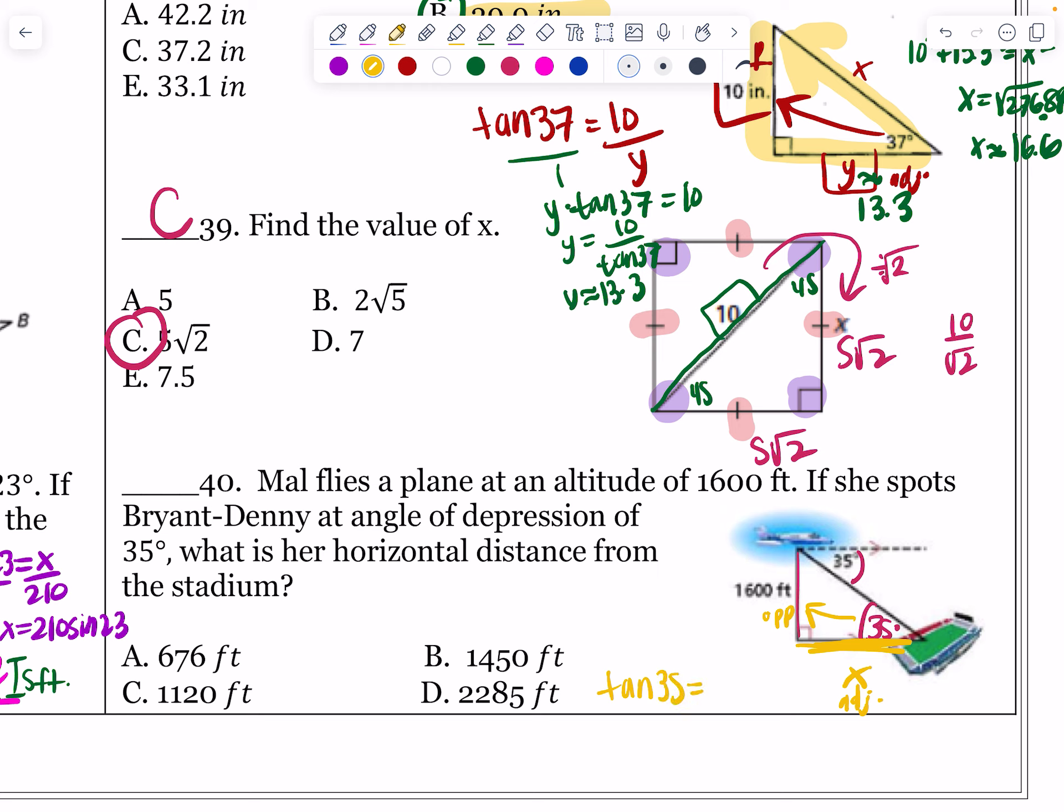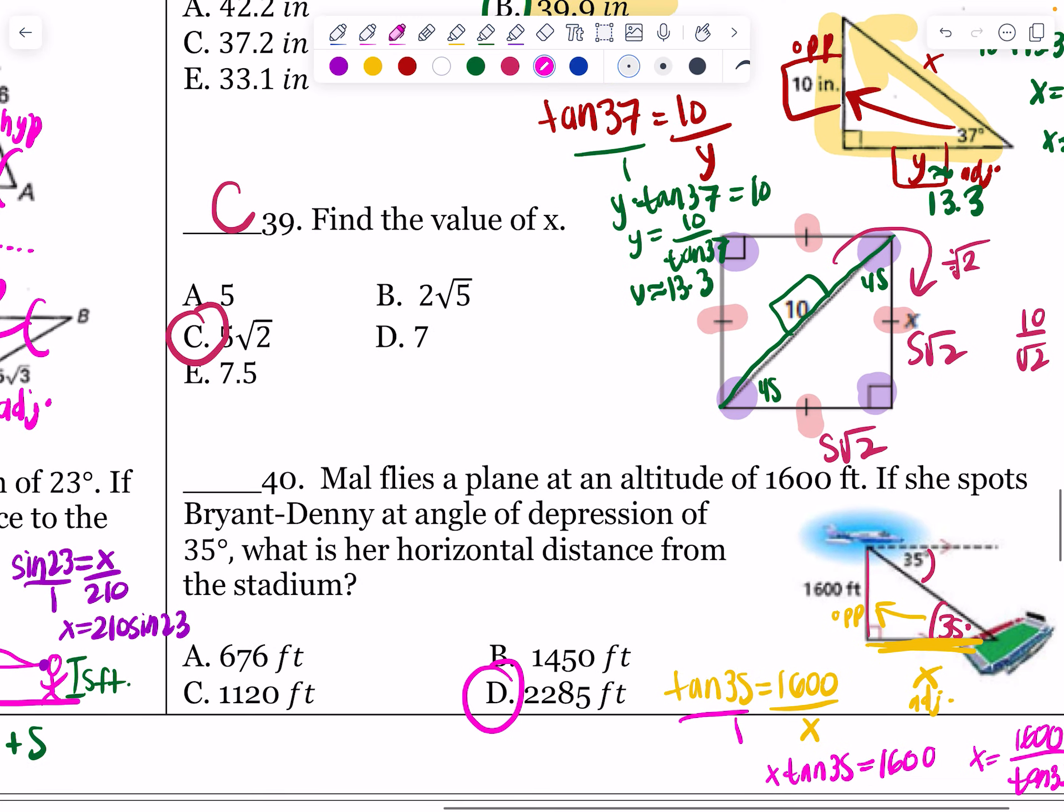So tangent of 35 is equal to opposite, 1,600, over adjacent X. I'm going to put this over 1. I'm going to use normal trig. I'm going to cross multiply. That's going to be X times the tangent of 35 equals 1,600. So we end up getting X is equal to 1,600 divided by the tangent of 35. So let's type that in. 1,600 divided by the tangent of 35 is going to give me a big number, that is going to be 2,285 feet. And so that's totally rounded to the nearest foot. That's 2,285 is how far my horizontal distance would be for X. And that is the last problem.